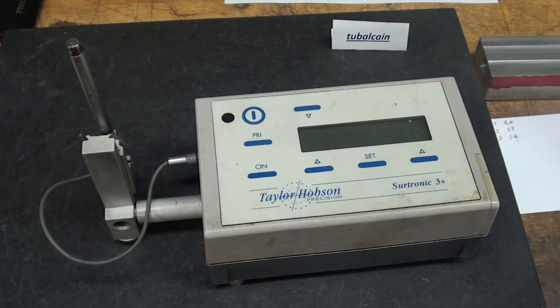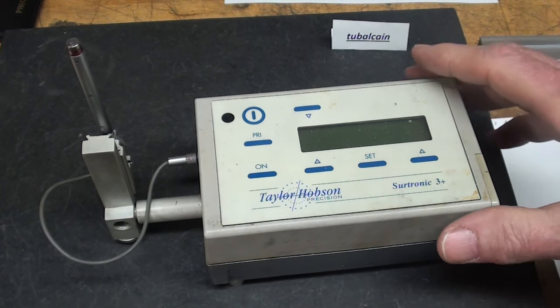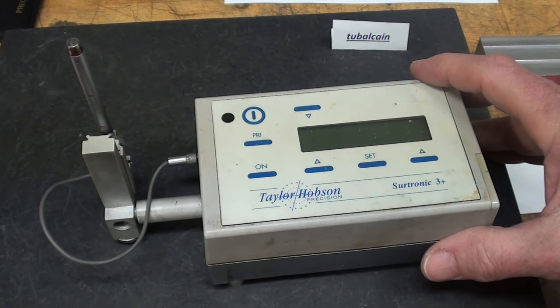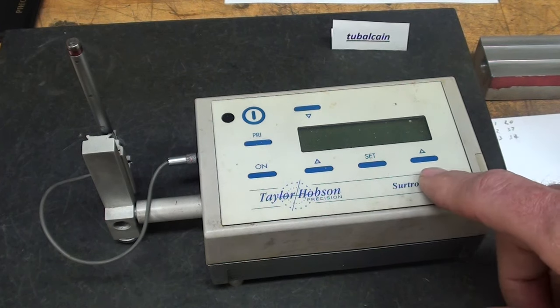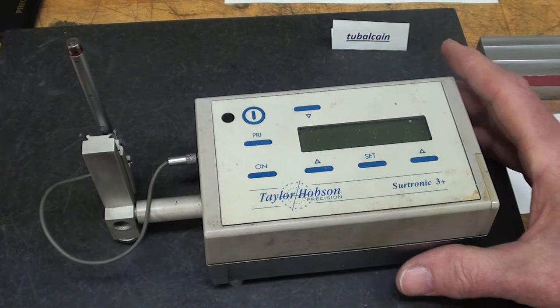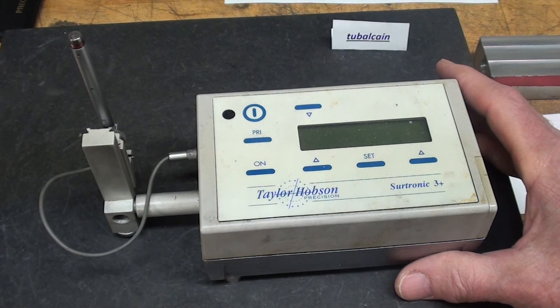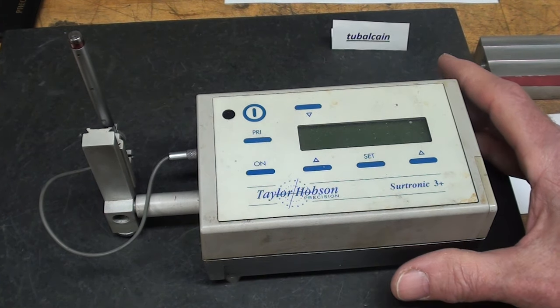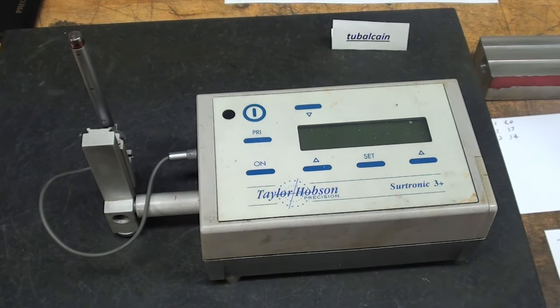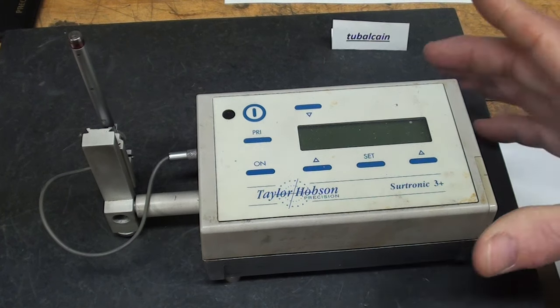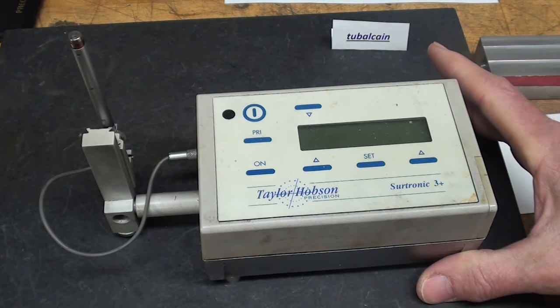Howdy, once again it's Tubal Cain and this is part two of my series on surface roughness or surface finish. Today in this part I'm going to talk about this surface profilometer that was given to me by Nick. It's a portable profilometer used to check RA or average roughness of finished machined work.